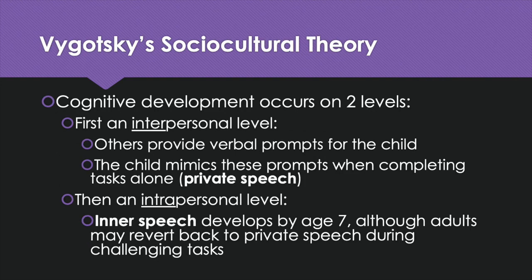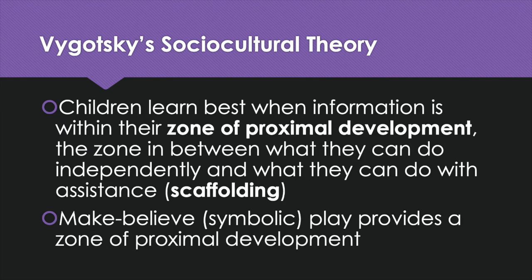Vygotsky's sociocultural theory says cognitive development occurs on two levels. First, on an interpersonal level, where teachers and adults provide verbal prompts for the child. Initially, the child mimics these prompts when completing tasks alone — this is called private speech. Then development occurs on an intrapersonal level, where inner speech develops by age seven, although adults may revert to private speech during challenging tasks. Vygotsky also said children learn best when information is within their zone of proximal development — the zone between what they can do independently and what they can do with assistance or scaffolding. He also argued that make-believe or symbolic play provides a natural zone of proximal development that helps children learn.